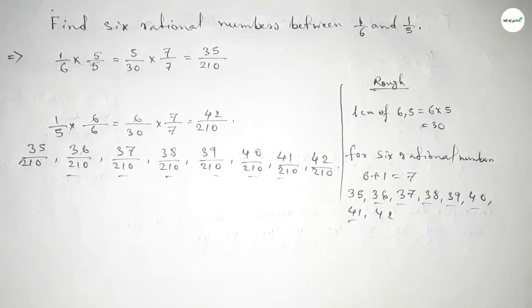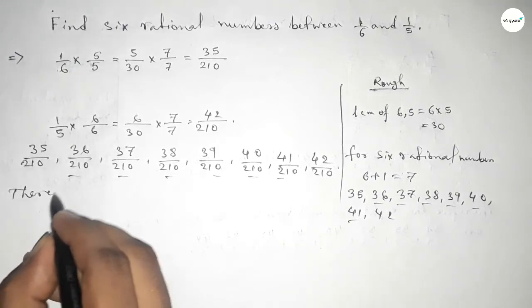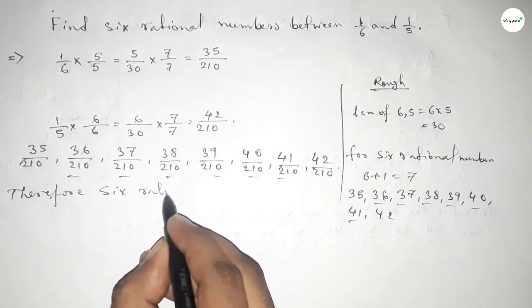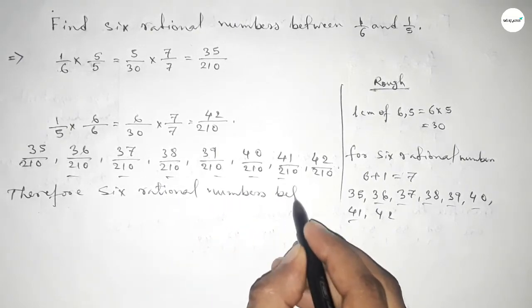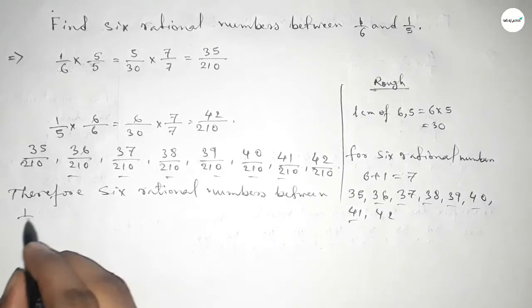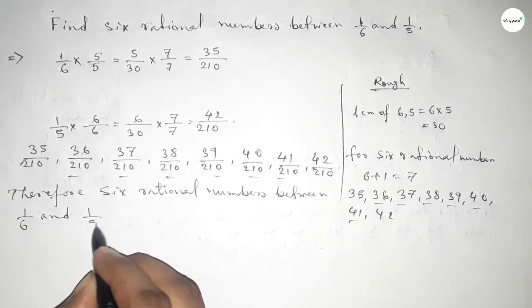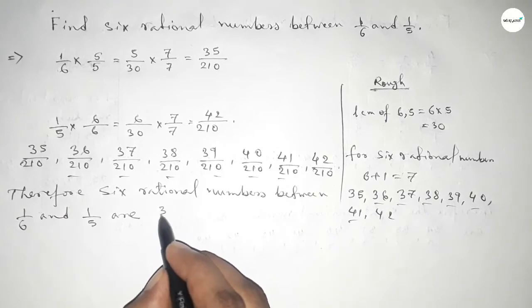Therefore, six rational numbers between 1/6 and 1/5 are: 36/210, 37/210, 38/210, 39/210, 40/210, and 41/210.